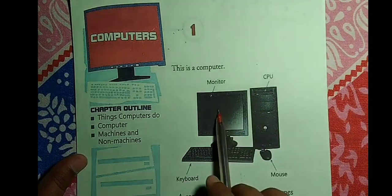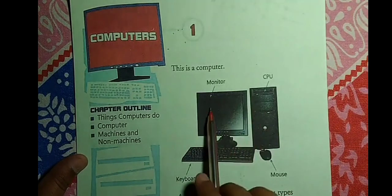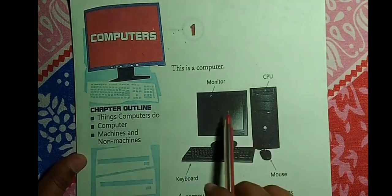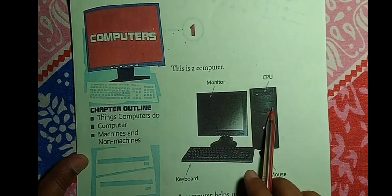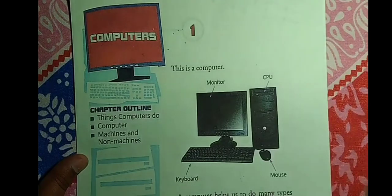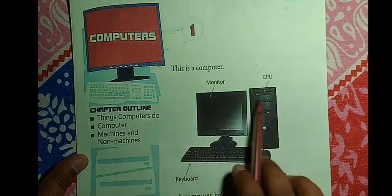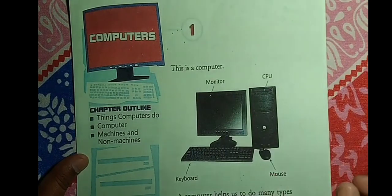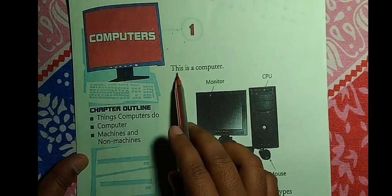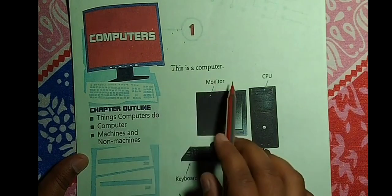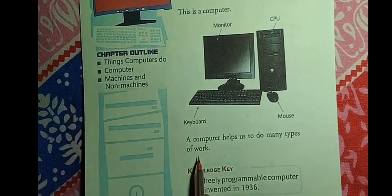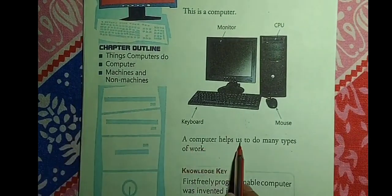This is a computer. What we call a monitor — this screen is part of the computer. This is the CPU, which is the brain of the computer. This is the mouse and this is the keyboard. All together, combining these parts, makes a computer.